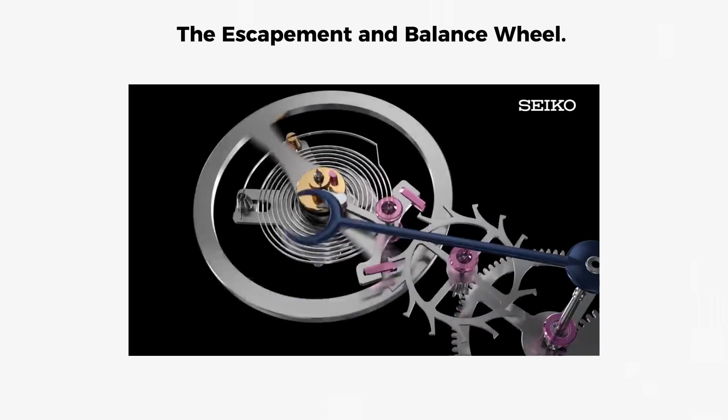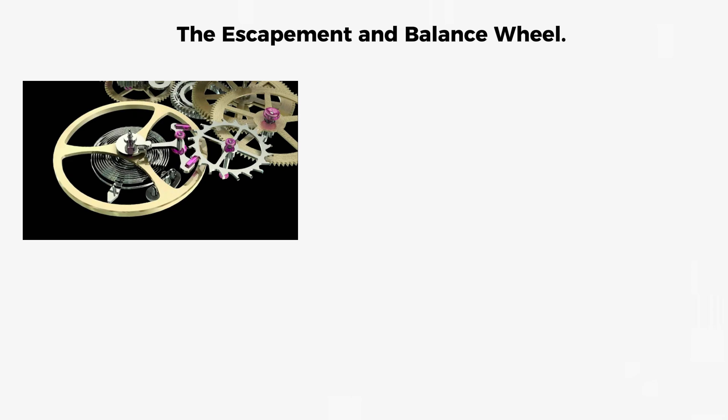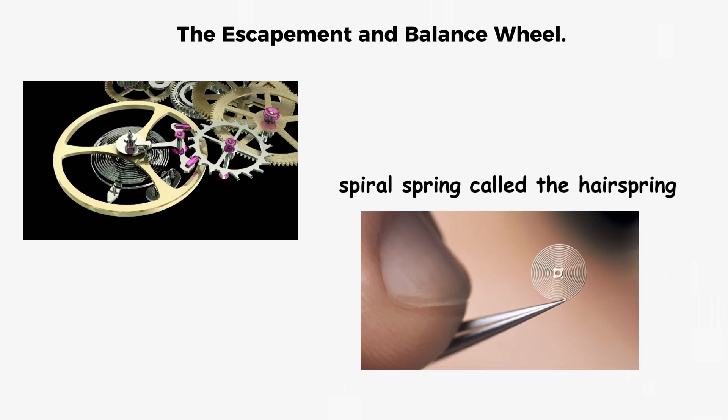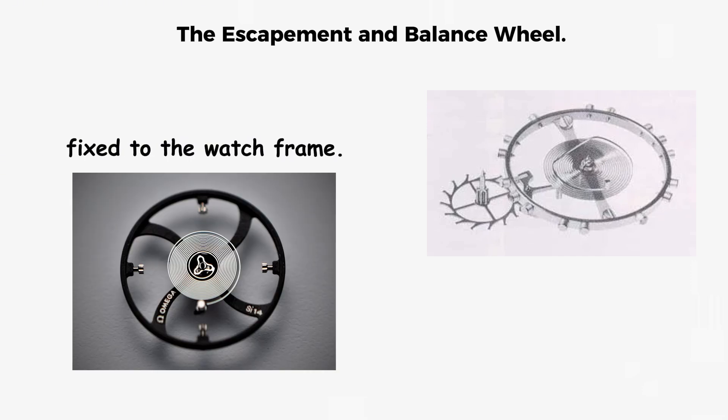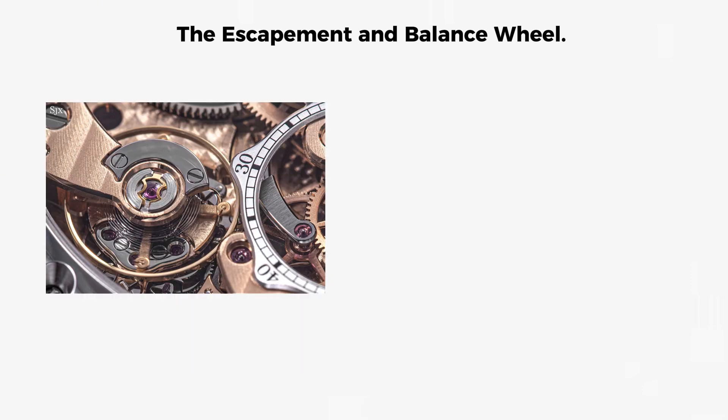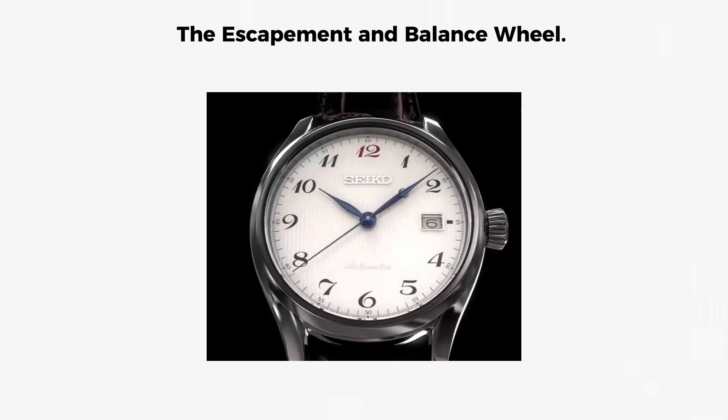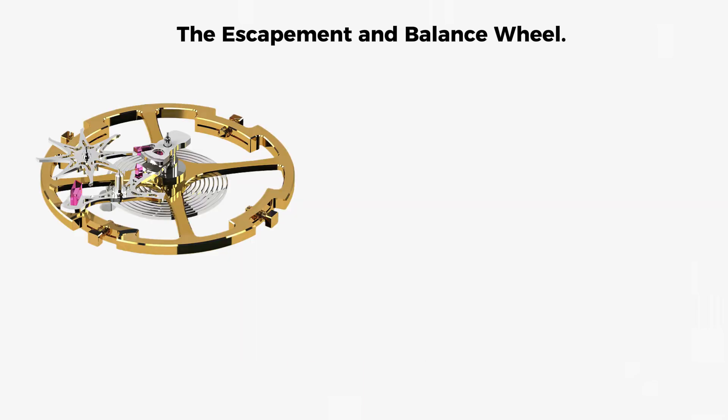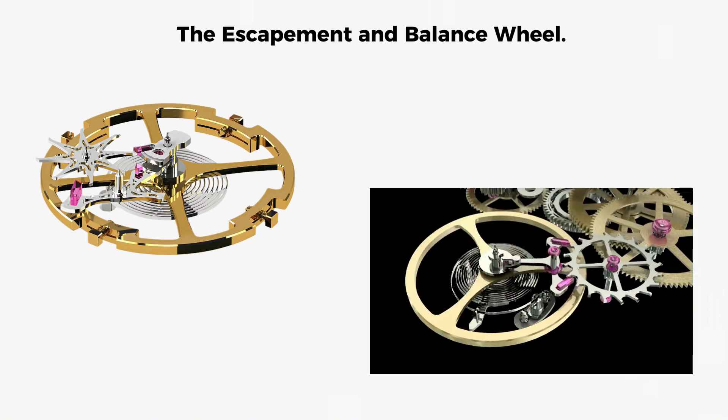The balance wheel is a weighted metal ring that swings back and forth around its central axis, returned toward its center position by a spiral spring called the hairspring. One end of the hairspring is attached to the balance wheel, and the other is fixed to the watch frame. Together, the balance wheel and hairspring form a harmonic oscillator that naturally vibrates at a specific frequency, typically 18,000 to 28,800 beats per hour, which translates to 5 to 8 beats per second. This oscillation rate is remarkably consistent, resisting changes in amplitude and maintaining the same period even when the swing gets larger or smaller.